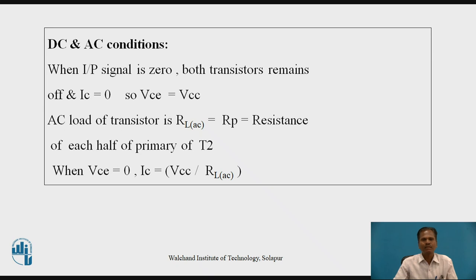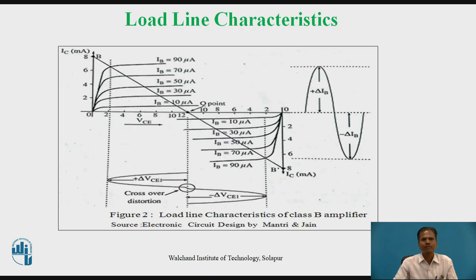The AC load resistance for each transistor, RLAC, is the resistance of each half of the primary of transformer T2. This figure shows the load line for Class B Power Amplifiers, showing the variation of output collector current and collector-to-emitter voltage in response to variation in base voltage and base current. Output collector current swings both positively and negatively, so collector voltage also varies positively and negatively, and through transformer action, collector voltage and current are provided to output load resistance RL connected to the secondary of transformer T2.